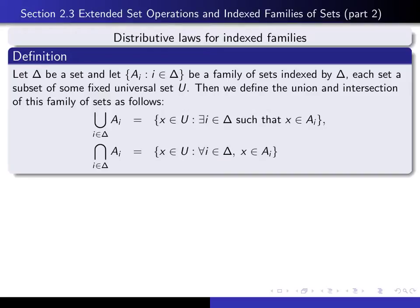To say that x is an element of the union simply means there exists an i in the indexing set such that x is in a sub i — that is the working definition of union. And to say that x is in the intersection of all of the sets means that for every i in our indexing set, x is in a sub i. That is the working definition of intersection.